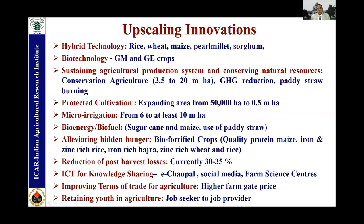Addressing hidden hunger: a lot of work has been done on biofortified crops. More than 72 varieties of different crops — rice, wheat, maize, pearl millet — have been developed which are biofortified with either pro-vitamin A, iron, zinc, high calcium protein, and reduced anti-nutritional factors like phytic acid. Upscaling these variety productions and bringing them into the food chain system is important to address hidden hunger. Regarding post-harvest losses, investment in this area has been slow. Of the total research investment in agriculture, while the bulk goes to enhancing productivity, almost 35 to 40% is lost due to poor post-harvest management, so investment in this sector needs to be very high.